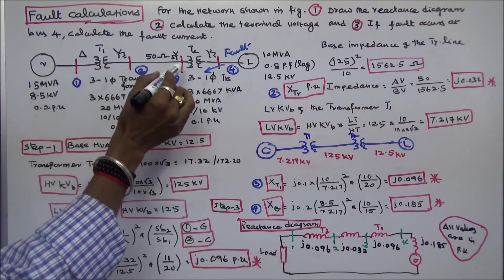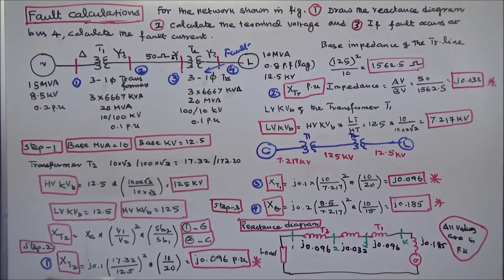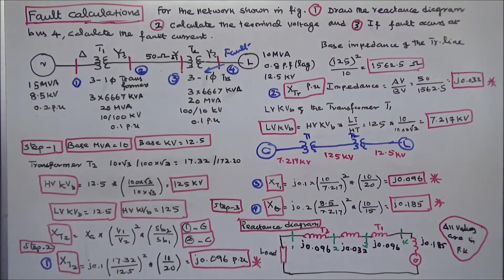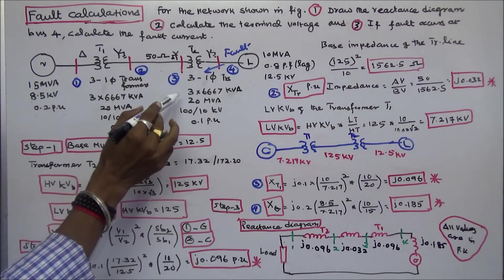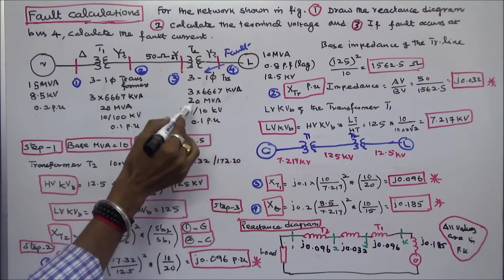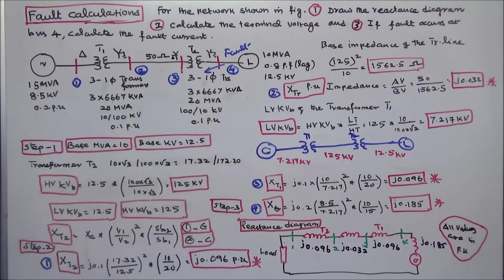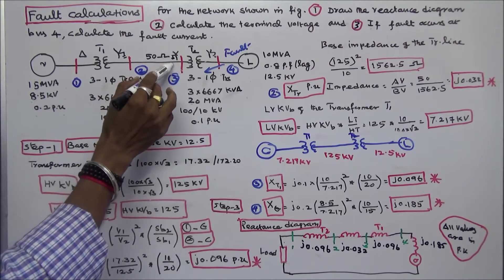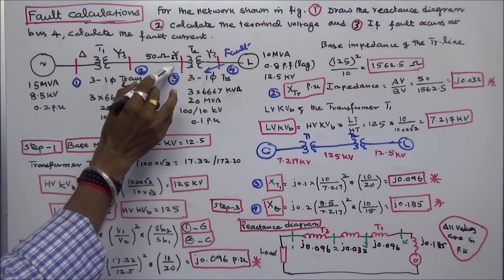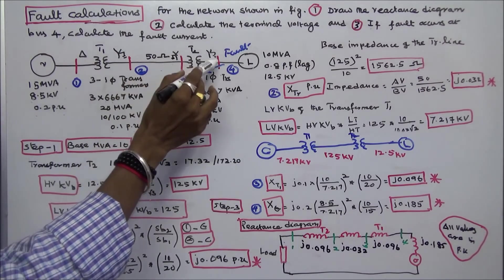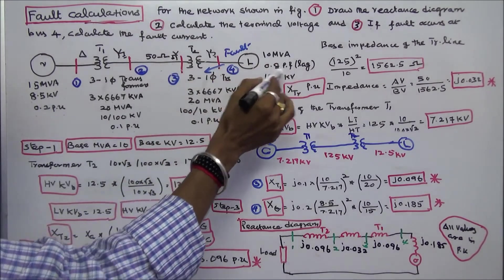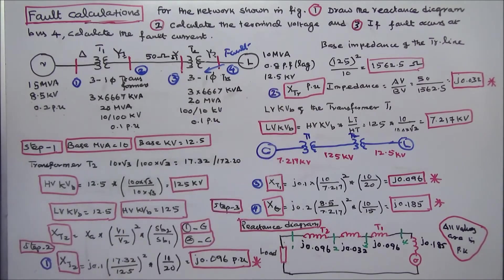The transmission line impedance is 50 ohms. Transformer 2 also consists of three single-phase transformers: 3 × 6,667 kVA equals 20 MVA. This side is star connected — 100 kV on one side and 10 kV on the other. The load is 10 MVA, 0.8 power factor lagging, at 12.5 kV.